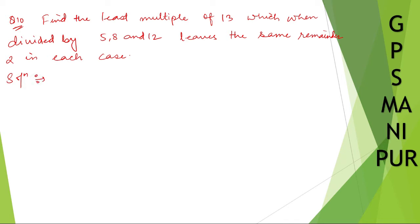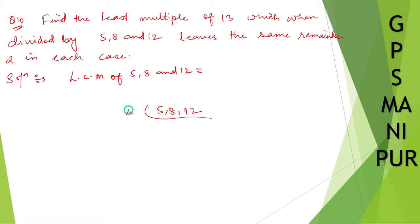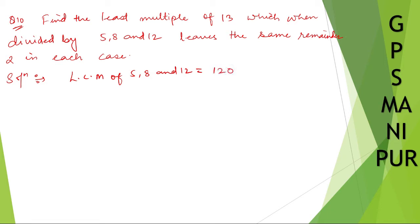Now, find the least multiple of 13. Comparing to the previous question, this question has a condition — it must leave remainder 2 when divided by 5, 8, and 12. Here also we are going to start with LCM. So let us find the LCM of 5, 8, and 12. Dividing by 4 directly: 5, 4×2=8, 4×3=12, giving us 120. The LCM is 120.